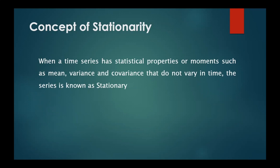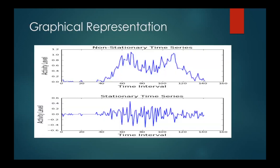Let us understand this concept through graphical representation. In the first graph, I have shown the non-stationary time series, while in the second graph, I have shown the stationary time series. In the non-stationary series, there is a visible trend — it initially rises, then falls, and rises and falls again. In the stationary series, there is fluctuation but no trend. Therefore, the series showing a trend is non-stationary, while the one with no trend is stationary.